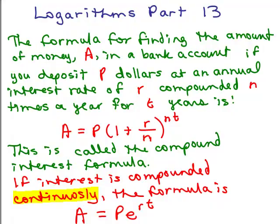We're going to do a practical problem now. A equals P parenthesis 1 plus R over N to the NT. That's called the compound interest formula. It's the formula for finding the amount of money, A, in a bank account if you deposit P dollars at an annual interest rate of R compounded N times a year for T years. Once we put in some numbers, that'll make more sense.